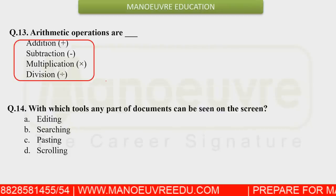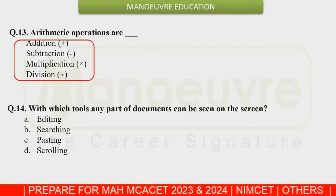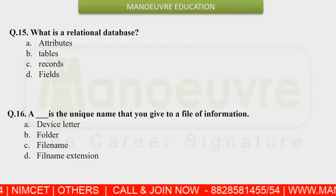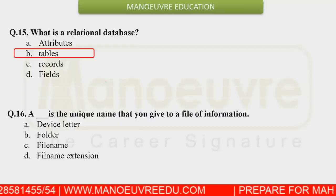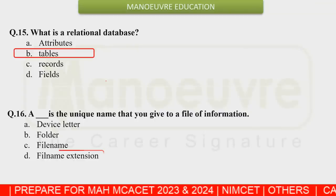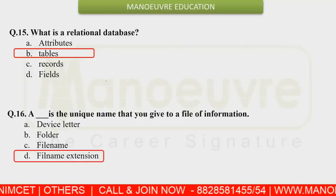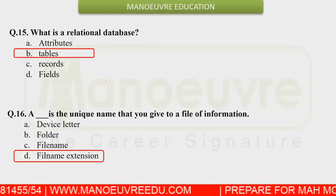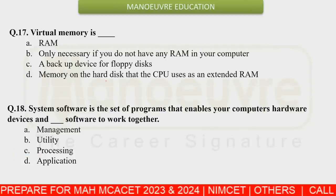There was a question about which tool allows any part of a document to be seen on screen — the answer involves scrolling. A relational database deals with tables. There was also a question about file name extensions — extensions tell you what type of information is stored inside the file, for example .jpg or .exe helps identify the file type.